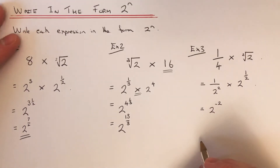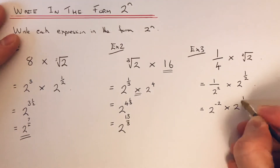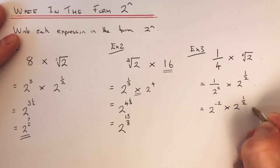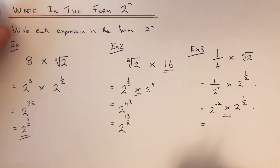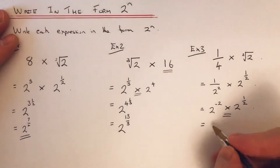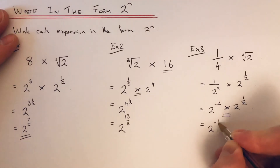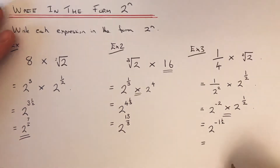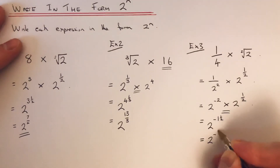So again, we're multiplying, so we add the powers at the top. Minus 2 and a half gives us 2 to the power of minus 1 and a half. And if you prefer an improper fraction, that is 2 to the power of minus 3 over 2.